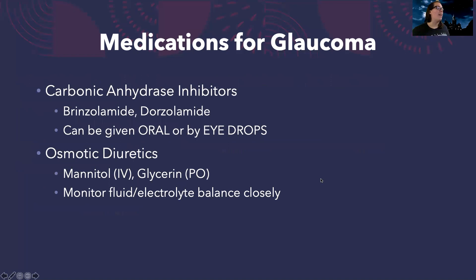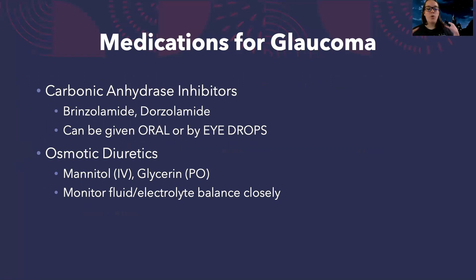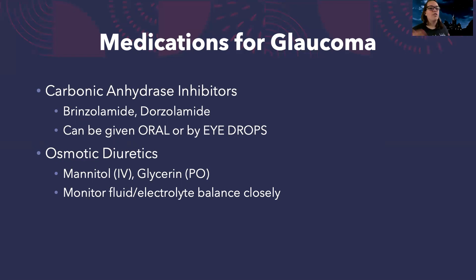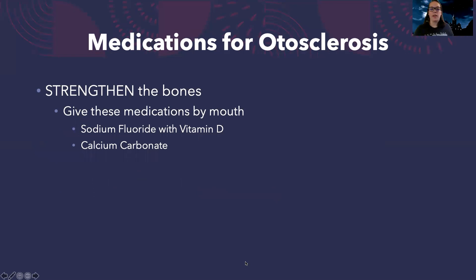We also have what are called carbonic anhydrase inhibitors. They all end in '-mide.' They can be given orally or by eye drops, and these are also going to help decrease the amount of fluid you're producing or help open up those passages so you can drain that fluid so pressure doesn't build up. We can also give oral or IV medications that are osmotic diuretics. These are used in acute glaucoma when things are really serious — they're going to cause you to diurese and get fluid off. We really want that pressure off the eye, but because of that, we're going to need to monitor the fluid and electrolyte balance closely. And that is all you need to know for these meds — as a nurse, it's knowing how to correctly administer these eye drops and knowing if there are any cardiovascular or fluid and electrolyte side effects to monitor for.